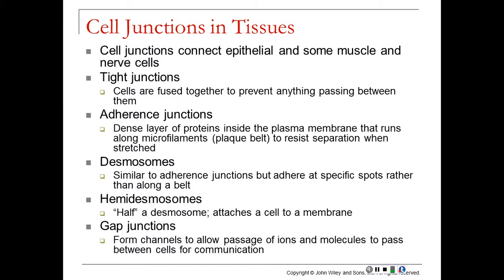Desmosomes are similar to adherens junctions but adhere only at certain spots rather than along the entire plasma membrane — like little buttons connecting cells together. Hemi-desmosomes are half of a desmosome; they attach a cell to a particular membrane, like little snaps holding a layer of cells in place on top of other tissue. Gap junctions form channels between adjacent cells to allow passage of ions, helping coordinate movements and communication.